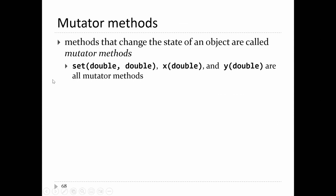Good morning everybody. Picking up from where we left off in the last lecture, we were talking about implementing methods for your class. If you have a non-static method, that's a method that's called using an object reference. We looked at some simple examples of methods, and those methods change the state of a point — either the X or the Y coordinate, or perhaps both.